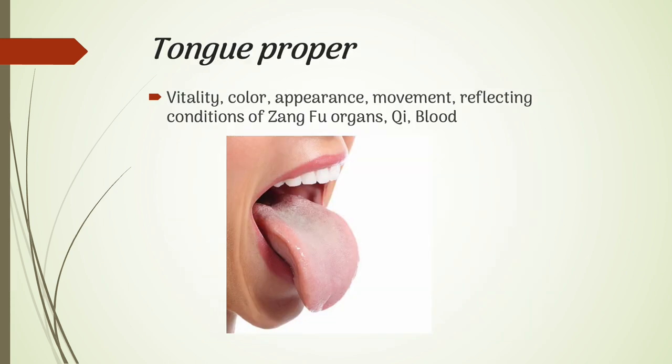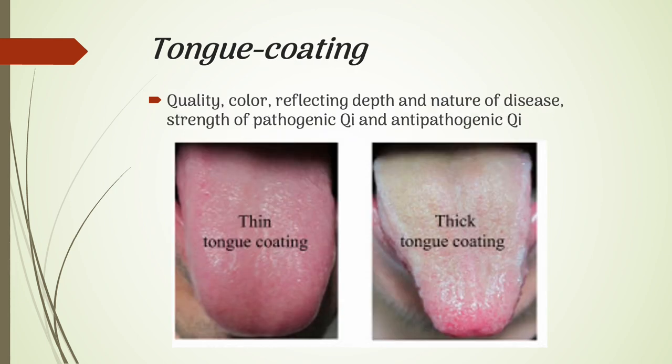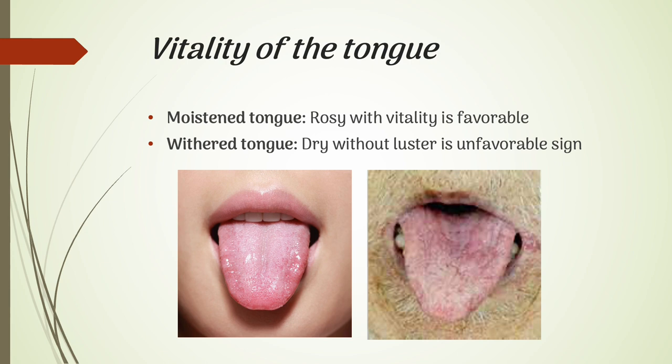What to observe: the tongue proper — vitality, color, appearance, movement — reflecting the conditions of the zangfu organs, qi and blood. Tongue coating — quality and color — reflecting the depth and nature of disease and the strength of pathogenic qi and anti-pathogenic qi. A moistened tongue is described as rosy with vitality and it is a favorable sign. A withered tongue is dry without luster and this is an unfavorable sign.